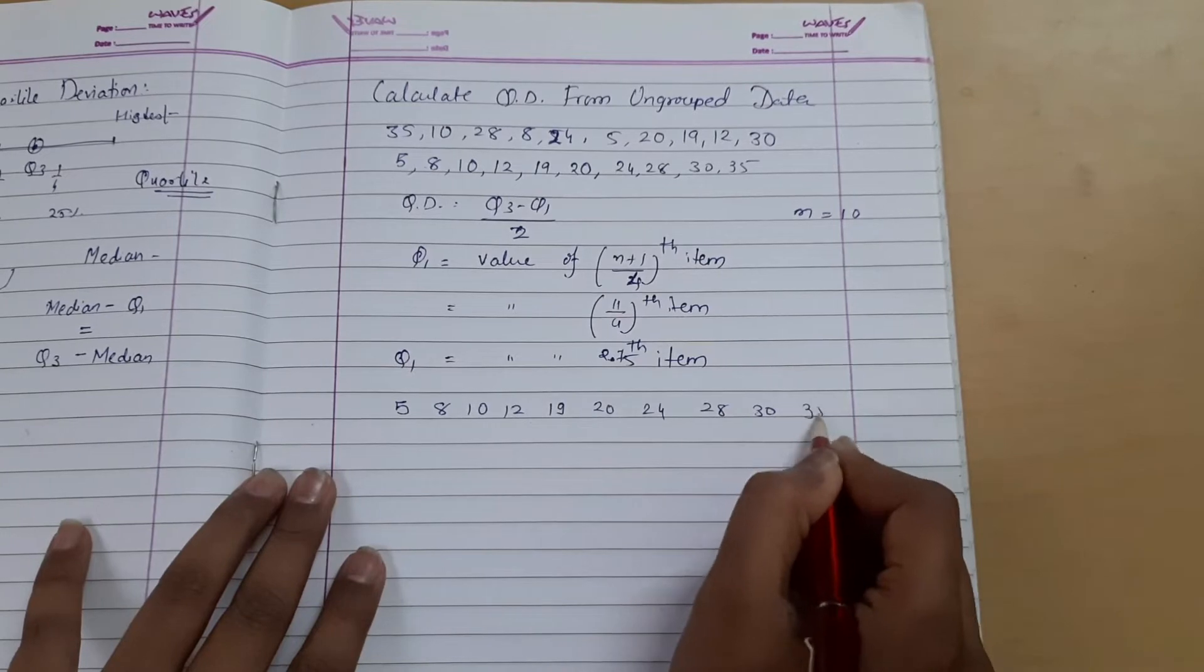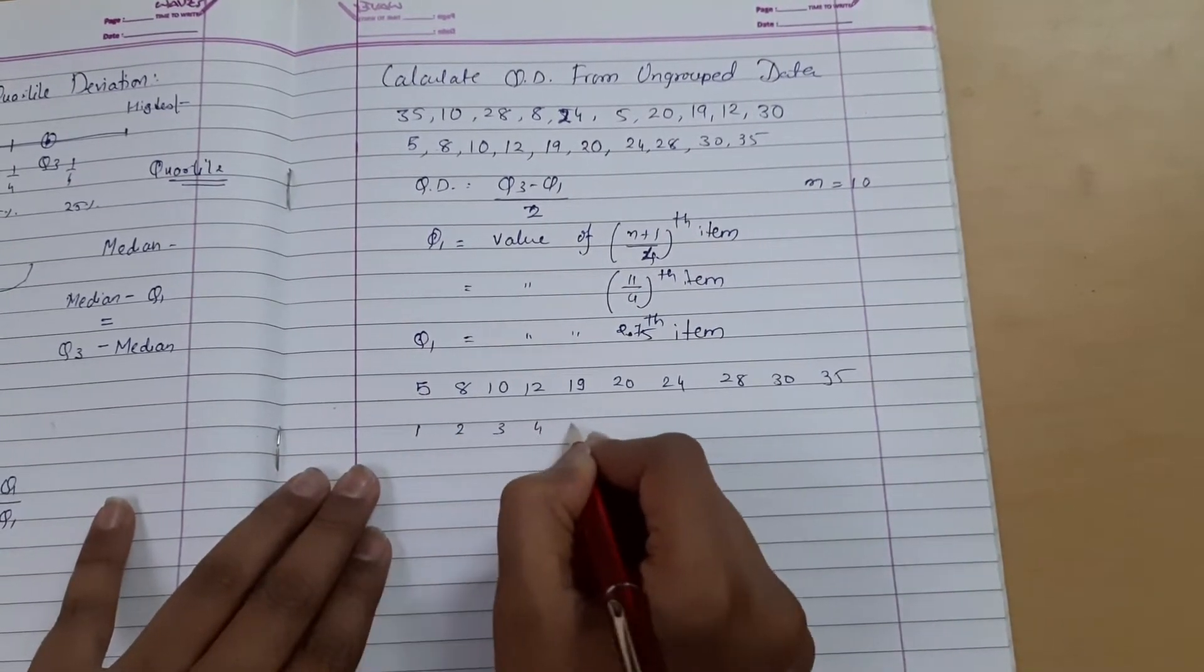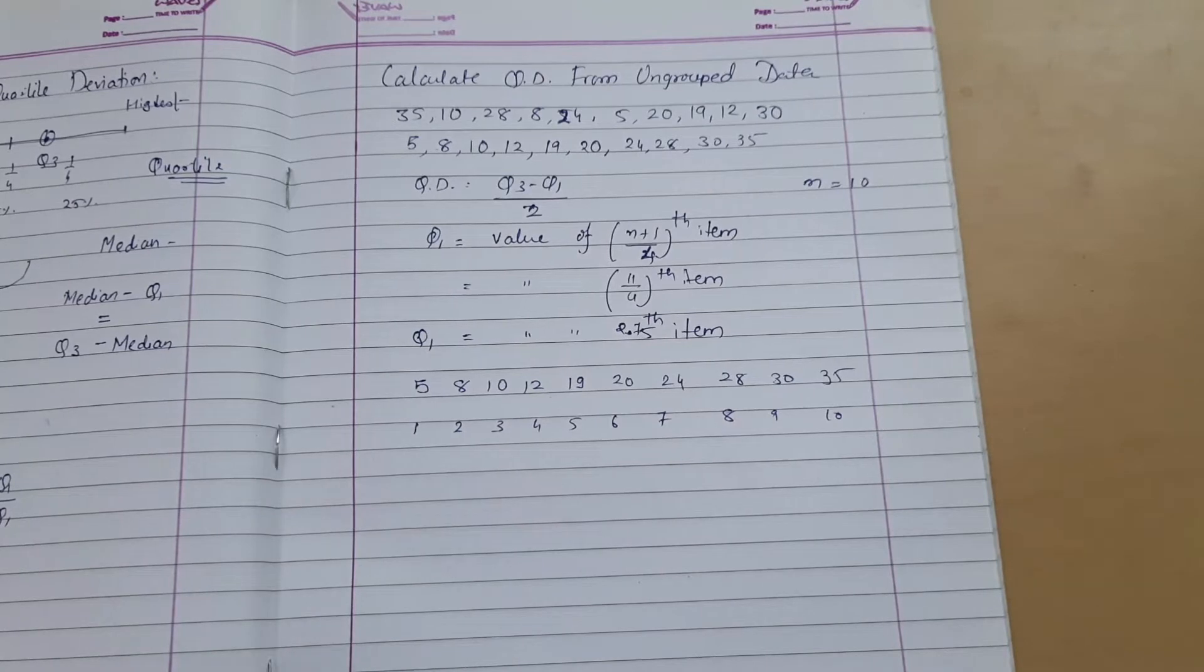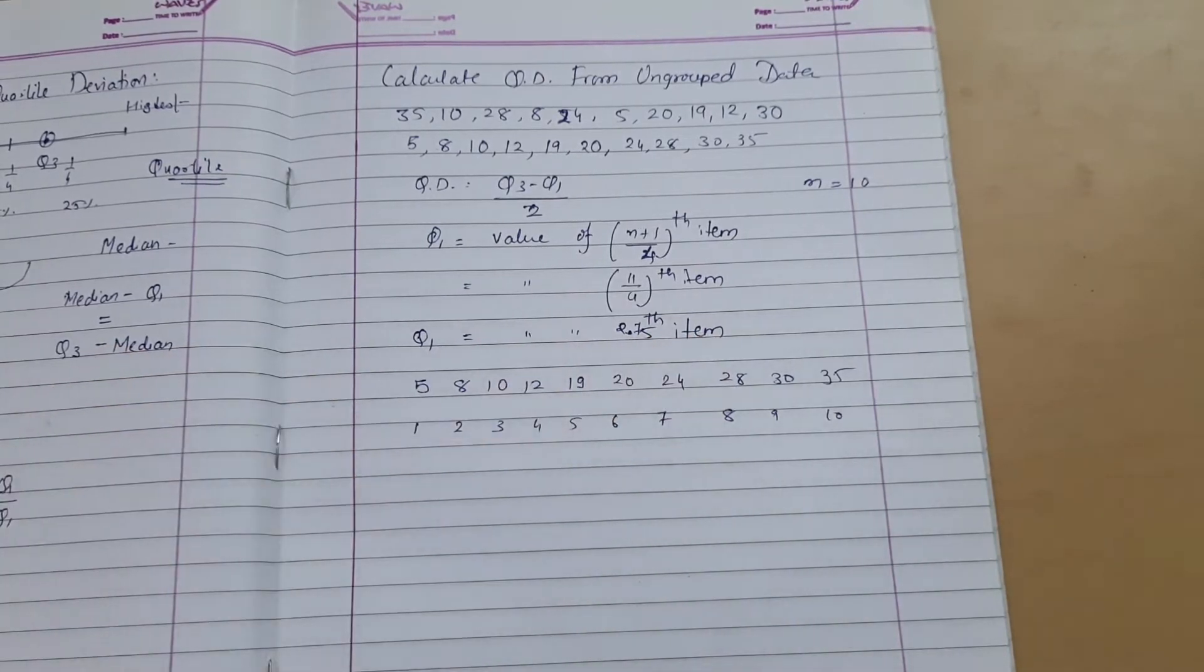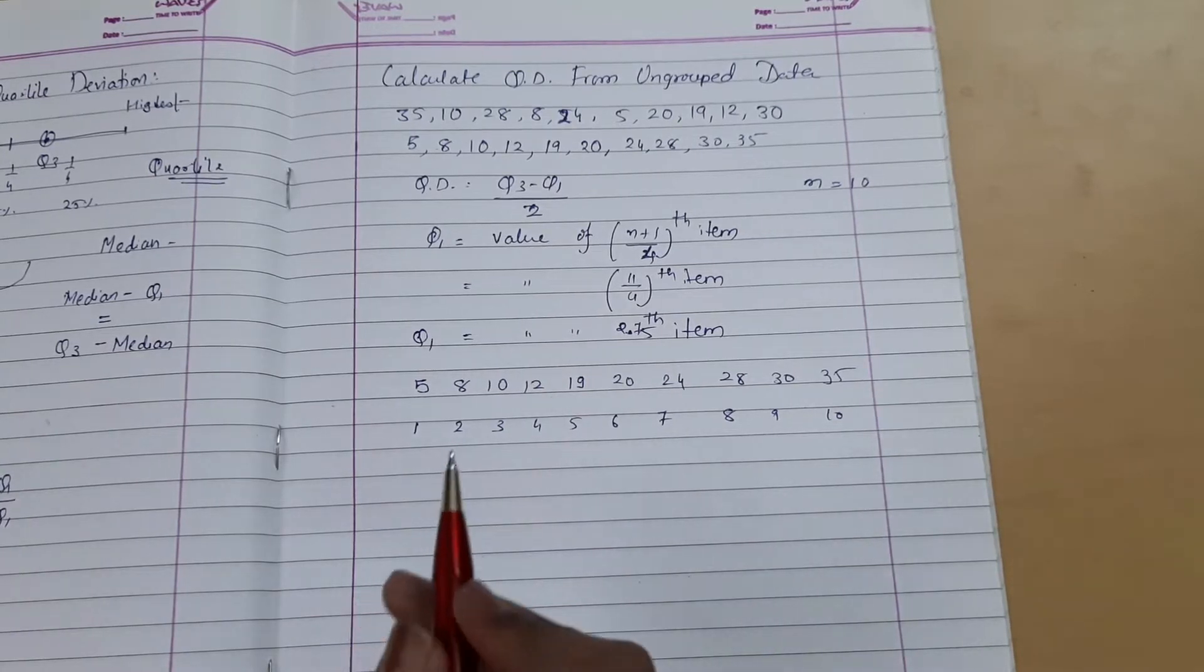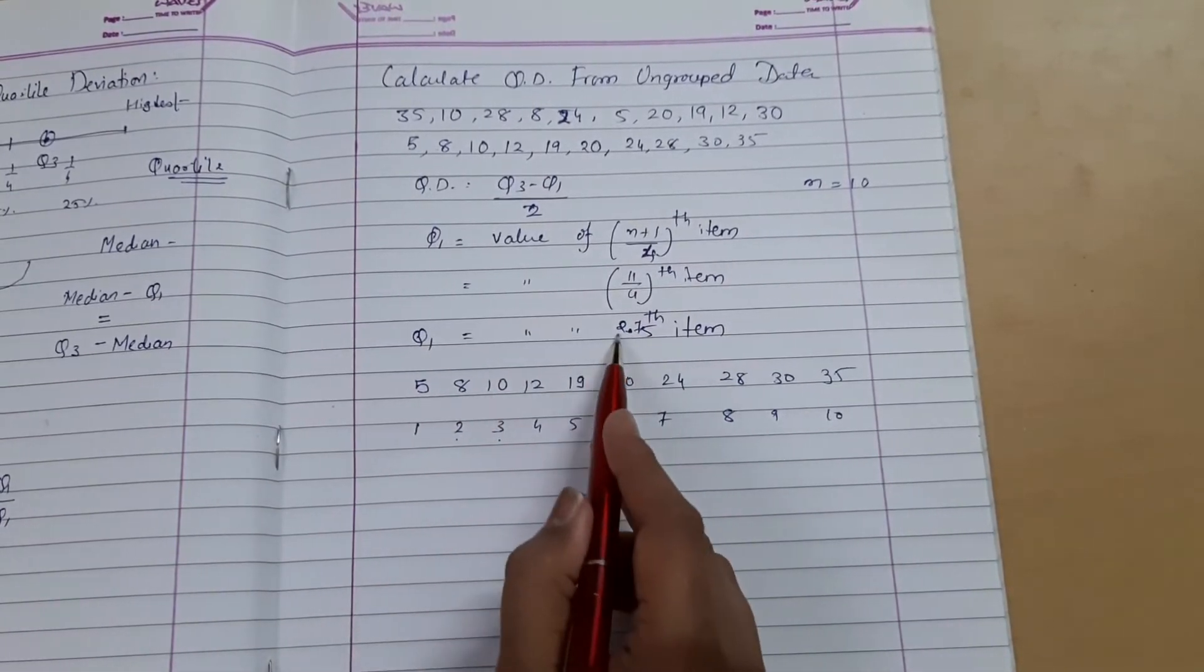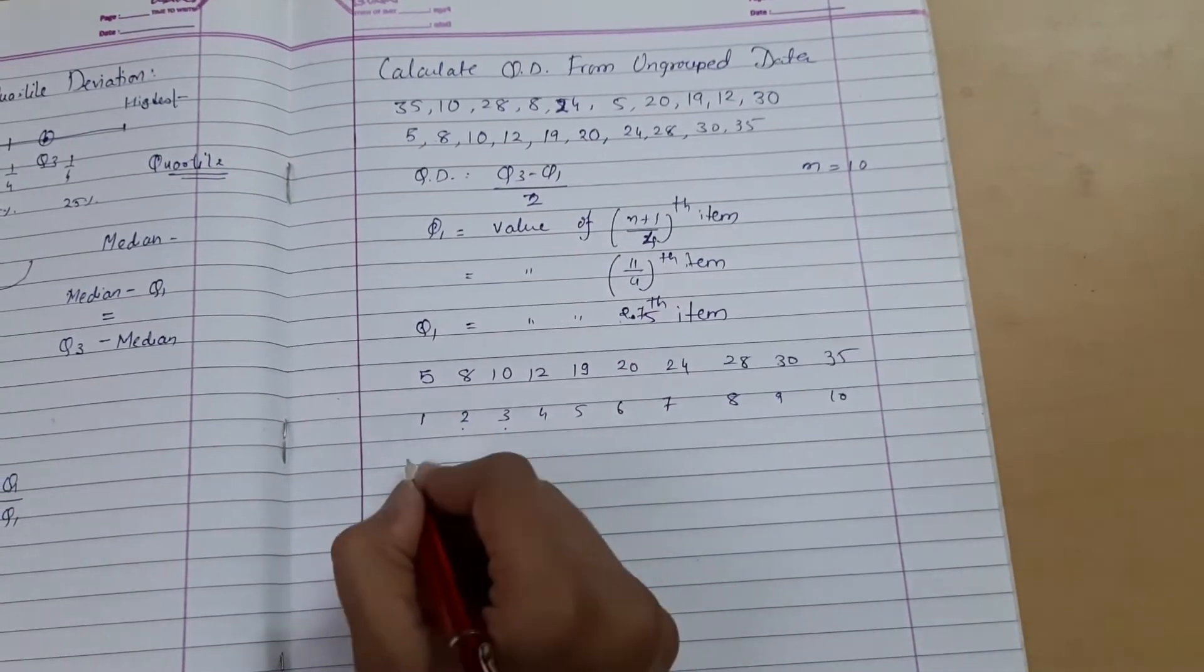Looking at our observations: 5, 8, 10, 12, 19, 20, 24, 28, 30, and 35. This is 1st position, 2nd, 3rd, 4th, 5th, 6th, 7th, 8th, 9th, and 10th. Total 10 observations. Q1 is at the 2.75th item, meaning the position is the value at 2.75. Where is the 2.75th position? Between 2 and 3. This means the position lies between 2nd and 3rd item.